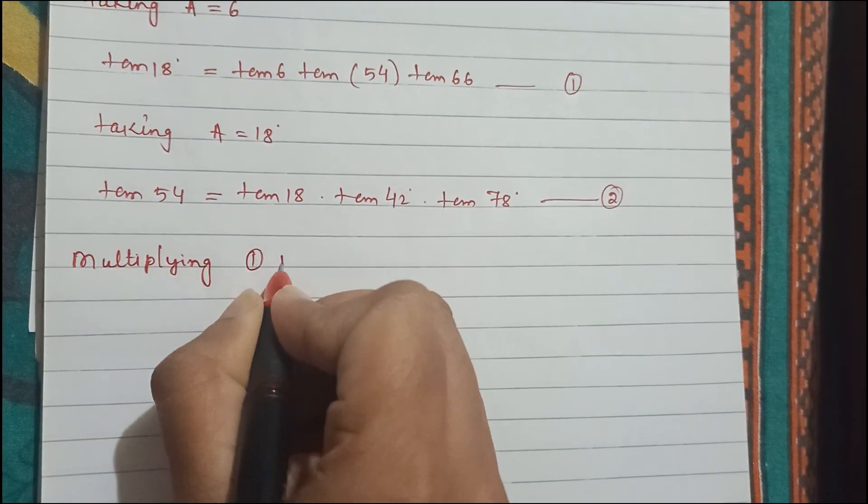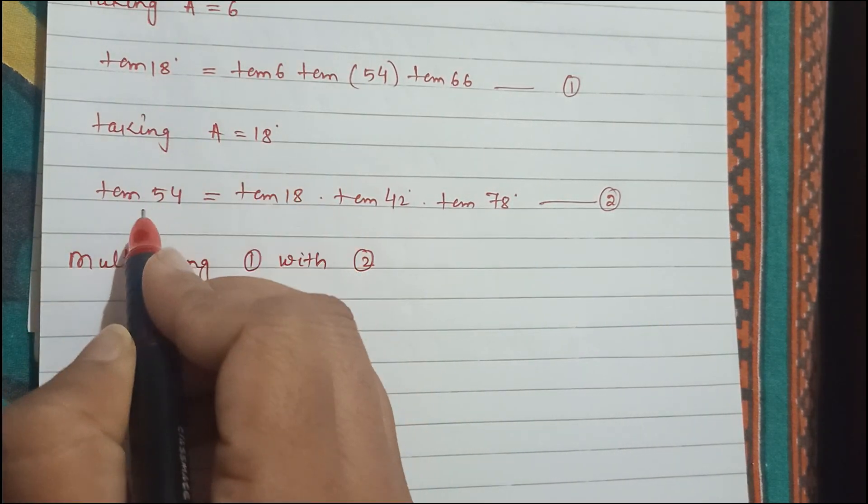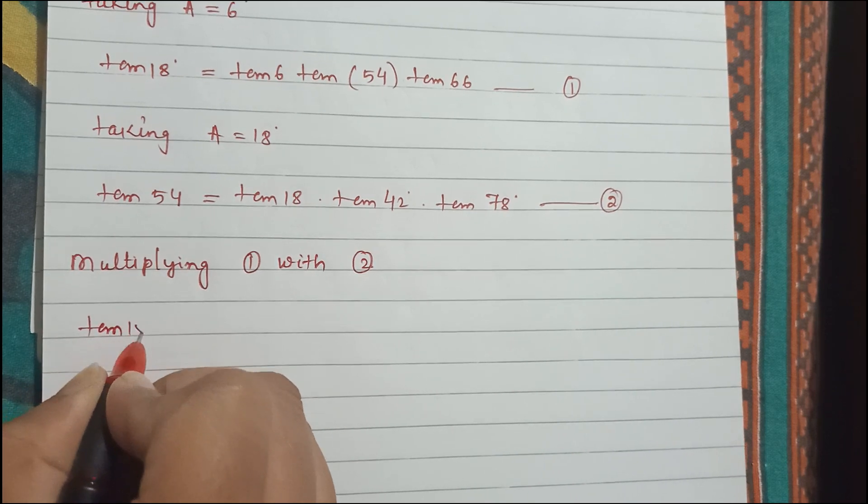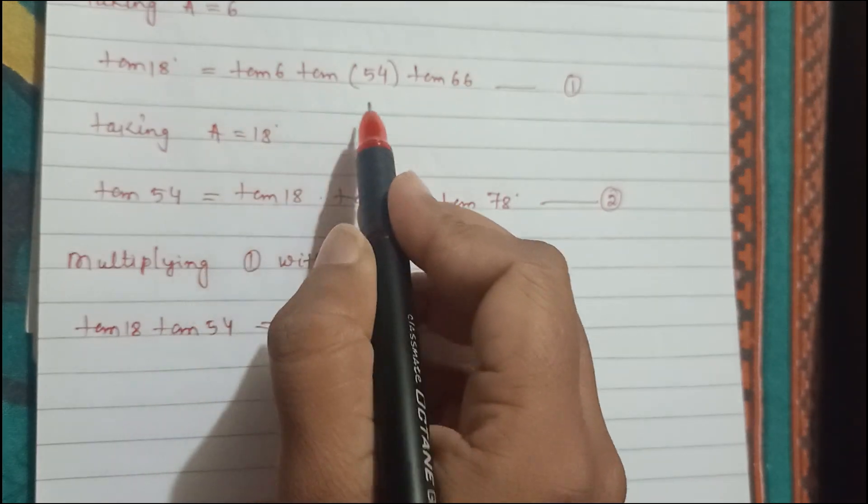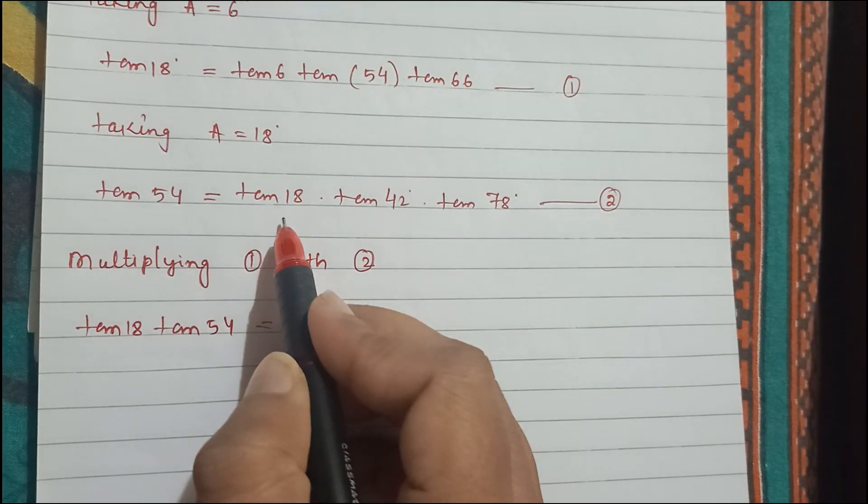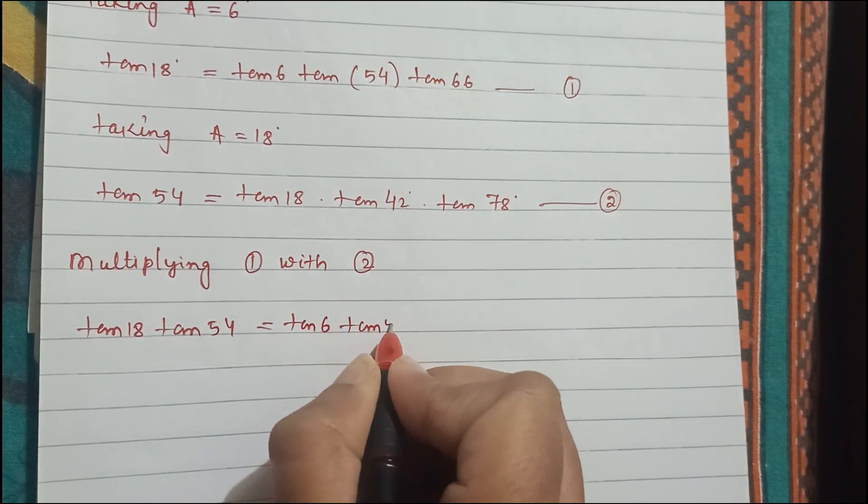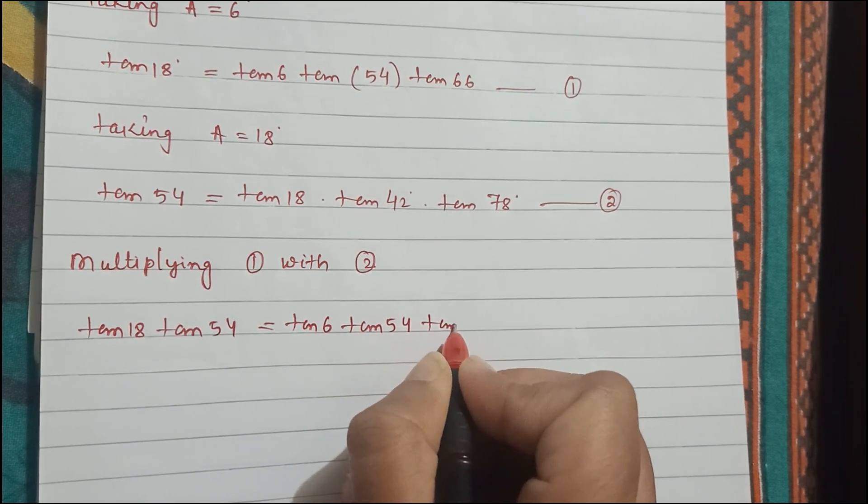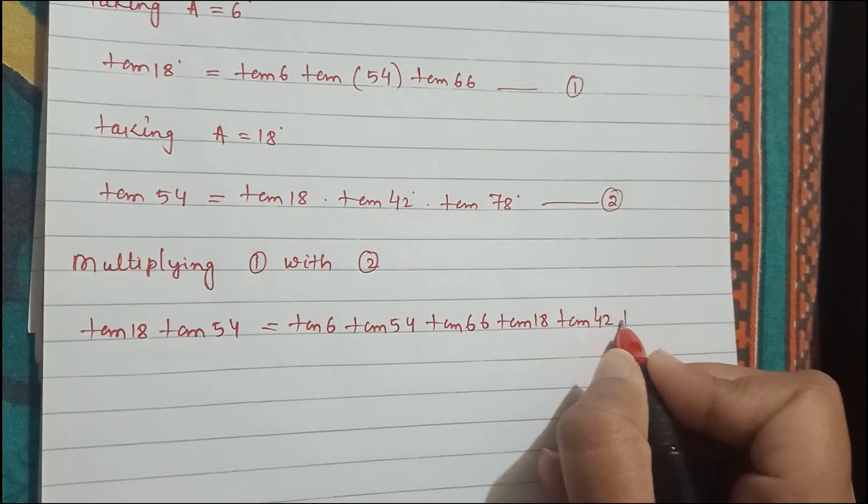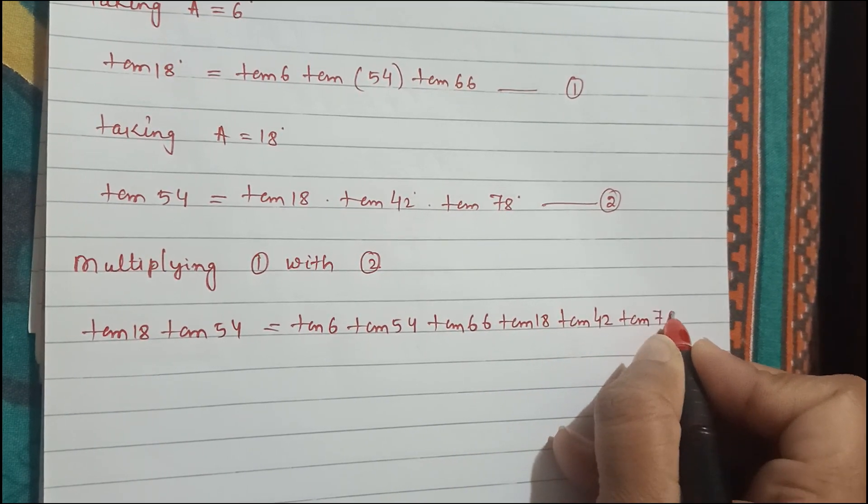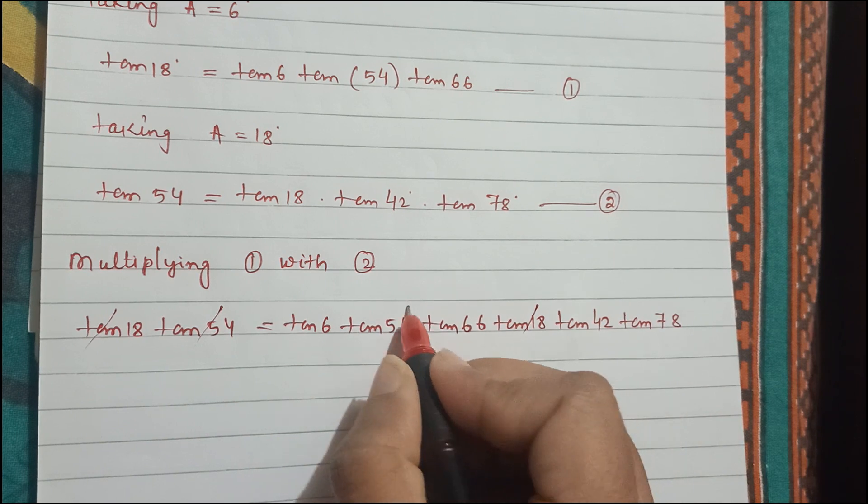Next we will multiply equation 1 with equation 2. So tan 18 into tan 54 equals to tan 6 tan 54 tan 66 tan 18 tan 42 tan 78. Cancelling tan 18 on both the sides and tan 54 on both the sides.